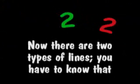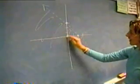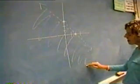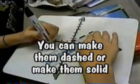Now there are two types of lines, you have to know that. You can make them dashed or make them solid.